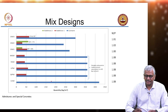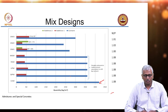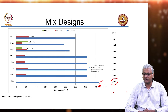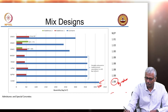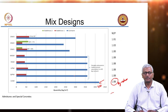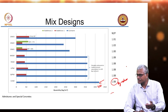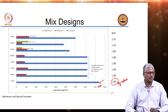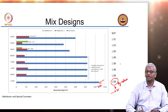Here are the mix designs. The control mix had a cement content of 420 kilograms per cubic meter and a water-to-binder ratio of 1.08 — this is presented by volume. To get the actual water-to-powder ratio by mass, you need to convert the volume of cement to an equivalent mass. So 1.08 by volume will approximately correspond to 0.35 by mass.